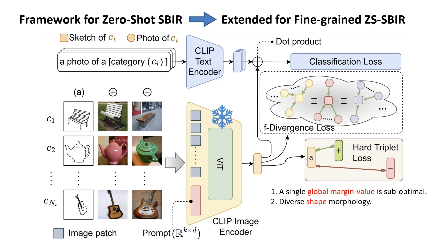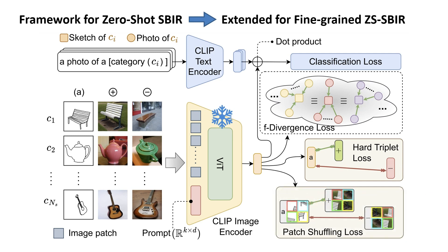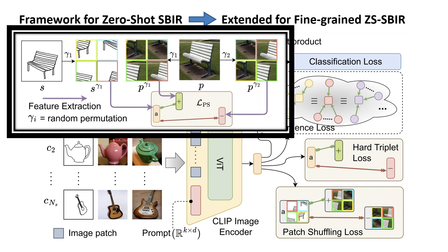For the first issue, we impose a regularizer that aims to make the relative sketch-photo pair distance uniform across categories, such that the same triplet loss with a single global margin parameter works for all categories. For the second, we introduce a novel patch shuffling loss. We permute n×n patches of sketch and photo using a random permutation gamma. Given a sketch-photo pair of any category, training should decrease the feature distance of the sketch permutation from the same permutation of its paired photo while increasing it from a different permutation. Please read the paper for more details.